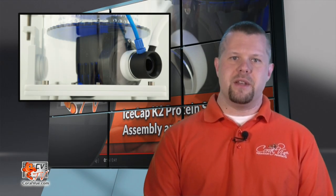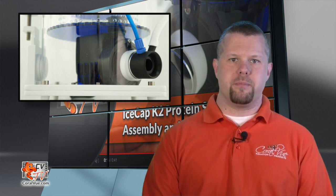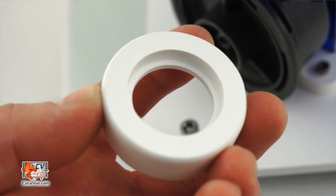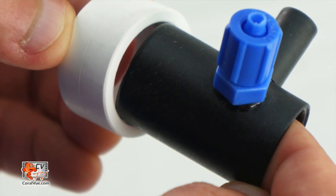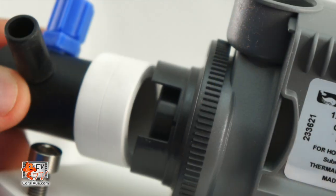Before we install the skimmer body, we need to install the white venturi coupling to the intake of the pump. Please make sure that the output coupling is installed properly by testing the other side of the coupling to ensure that the venturi fits.